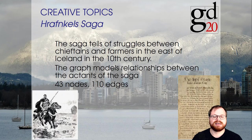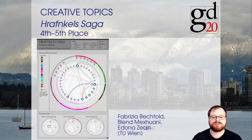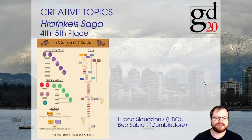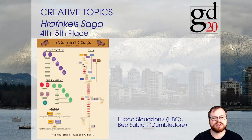In shared fourth place, we have two submissions. The first is by Fabrizia Bechthold, Glenn Mekuani, and Edunua Sikiri from TU Vienna — a nice drawing where all the actants are laid out on a circle, with arcs inside or outside, and color indicating in which chapter the action happens. The second is by Lucas Iazionis from UBC and Bea Subion from Dumbledore — a nice orthogonal drawing where the story unfolds from top to bottom, so you can follow one character and see all their interactions.